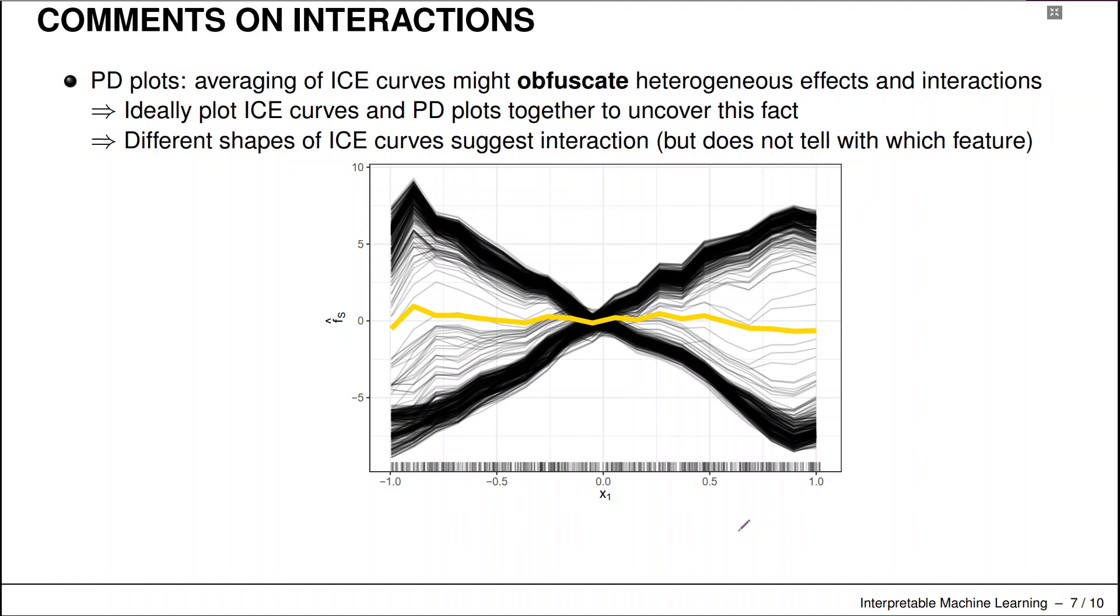Interactions can be problematic. So if we average out many different inhomogeneous ICE curves, we might actually obfuscate heterogeneous effects and interactions. So it's usually a good idea to plot ICE curves and PDP plots together to hopefully uncover this fact. So in this instance here, maybe we want to characterize the effect of blood pressure on a certain medical intervention or for the probability of developing a certain disease.